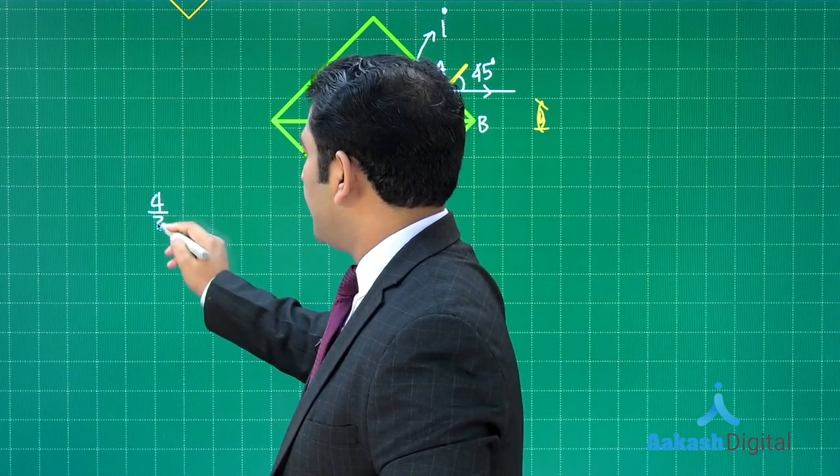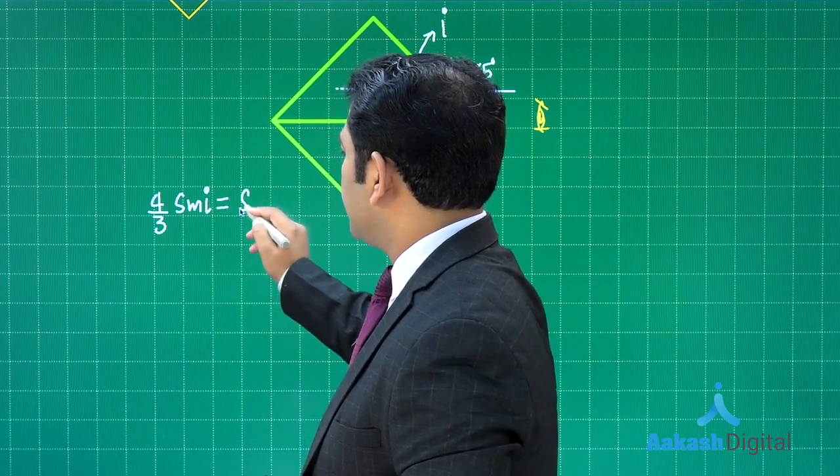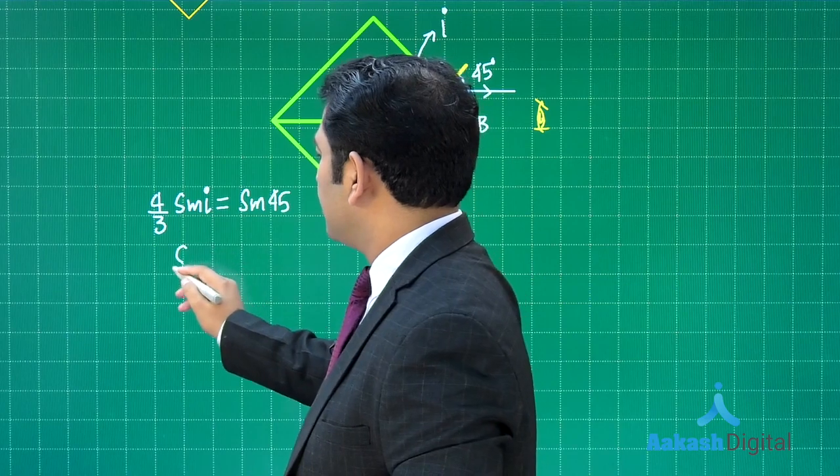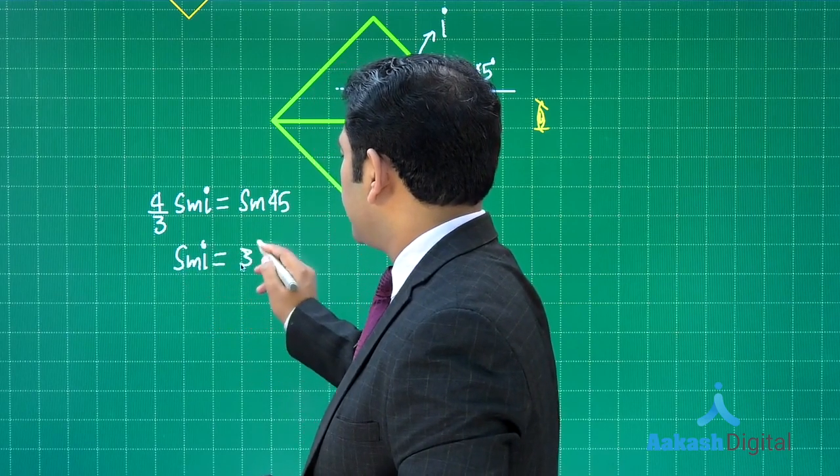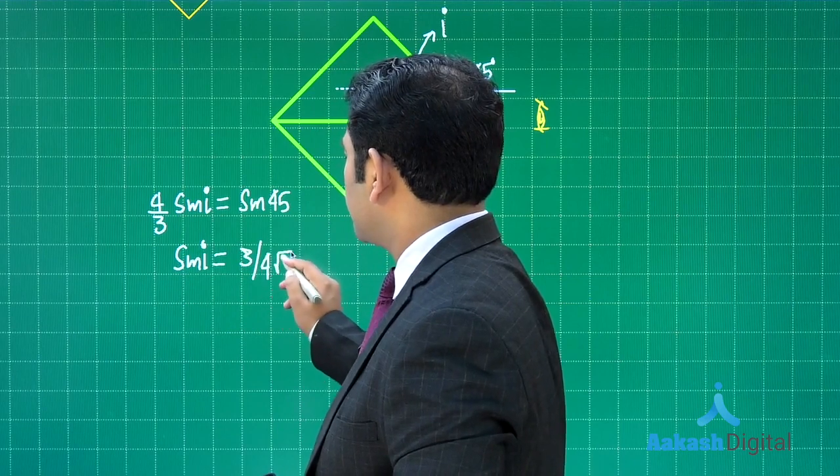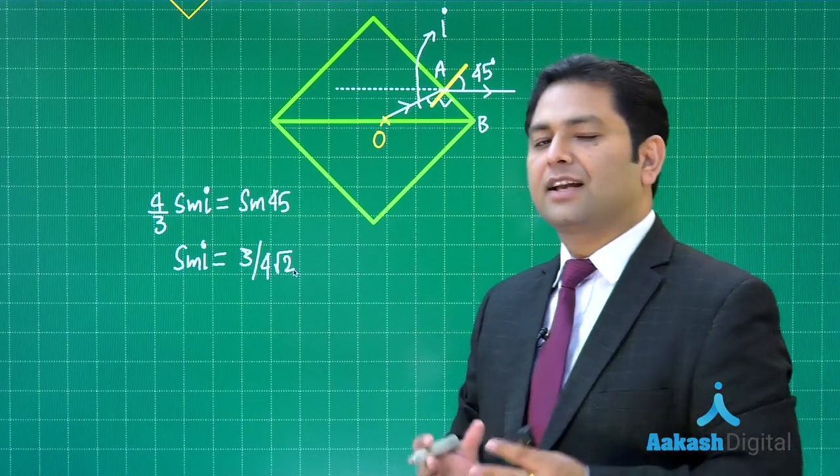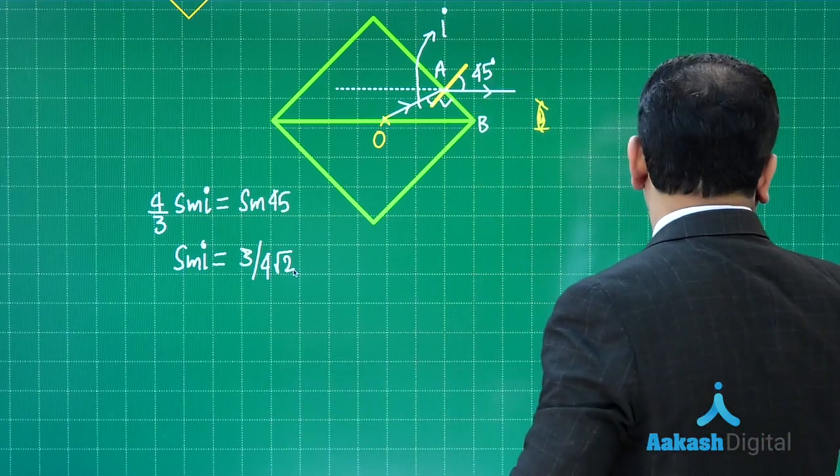μ, which is 4/3, times sin i equals sin 45. This equation gives me the value of sin i, and that equals 3/(4√2). If I know sin i, I can calculate cos i, tan, anything can be done.